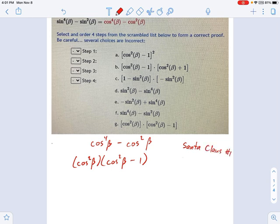If you remember what Santa Claus stands for, Santa Claus is number one: sine squared plus cosine squared equals one. Which means if you rearrange it a bit, cosine squared minus one equals negative sine squared.